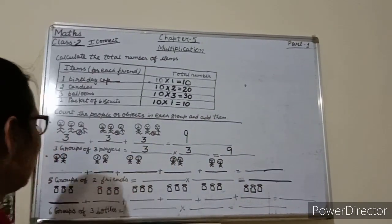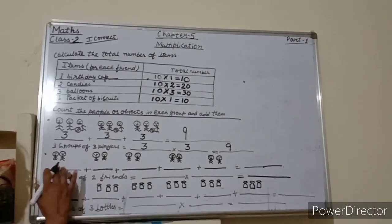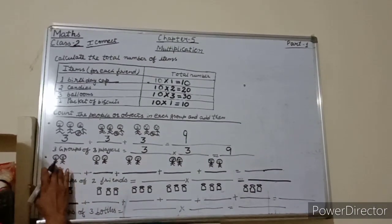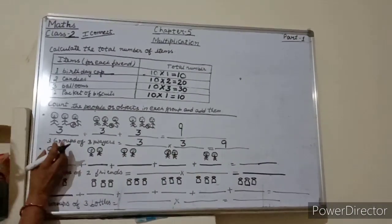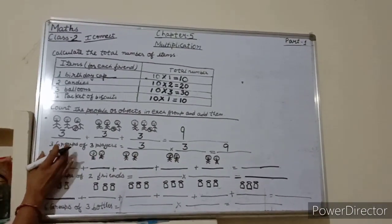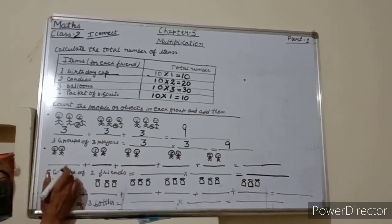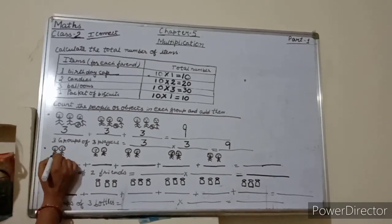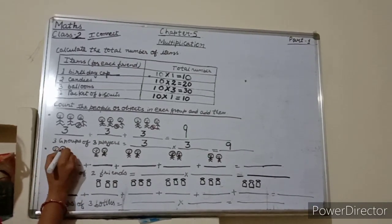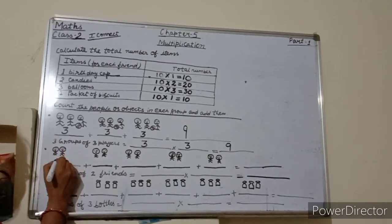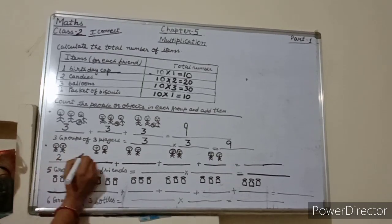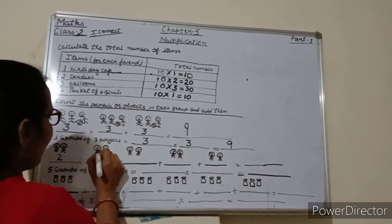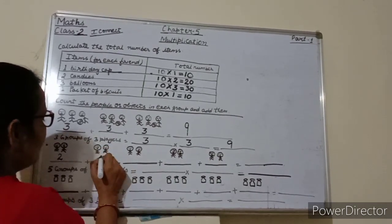Now come to the next. Again start counting — how many people are there in each group? 1, 2 — write 2 here. Again: 1, 2. Again: 1, 2. Again: 1, 2.